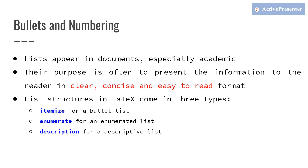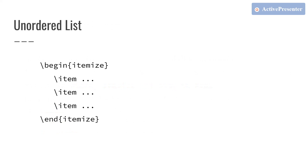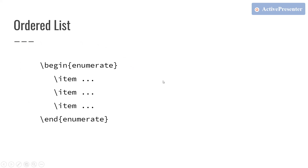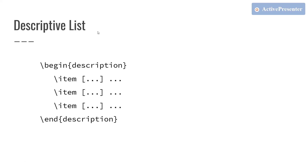We use the keywords itemize, enumerate, and description to specify these types of lists in LaTeX. To create an unordered list, we use the keyword itemize and embed it in the begin and end environment. Each element of the list is specified separately with the item command. For an ordered list, we use an environment called enumerate between begin and end, and each element is placed inside item commands.